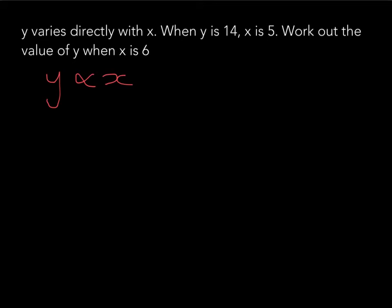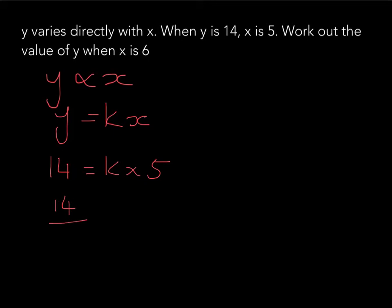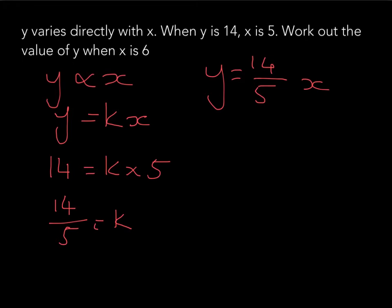Y is directly proportional to x, so y equals kx. We substitute our two known values: 14 equals k times 5, so 14 divided by 5 equals k. That doesn't divide nicely and doesn't simplify. So the equation we get is y equals 14 over 5 times x. Now we need to find y when x is 6.